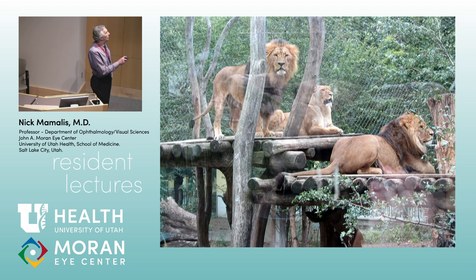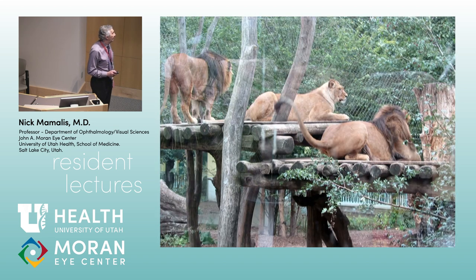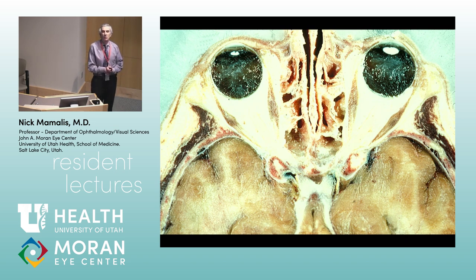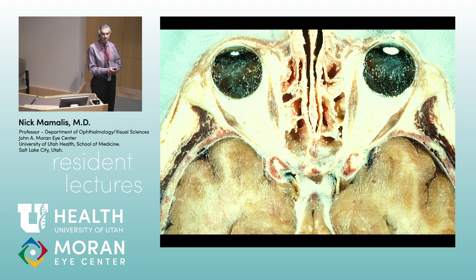I was trying to get a mid-roar shot — she was trying to roar a little bit. Okay, so we're going to talk about the orbit. When we define the orbit, there are seven bones around it. Brad, tell us the bones around the orbit: there's maxillary, sphenoid, ethmoid, lacrimal, palatine, frontal, and zygomatic.